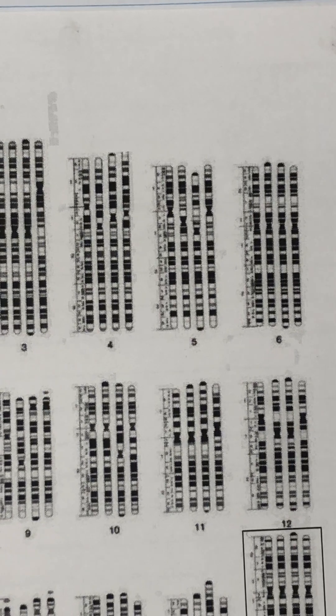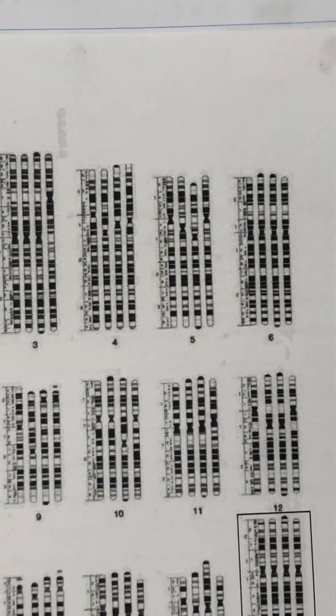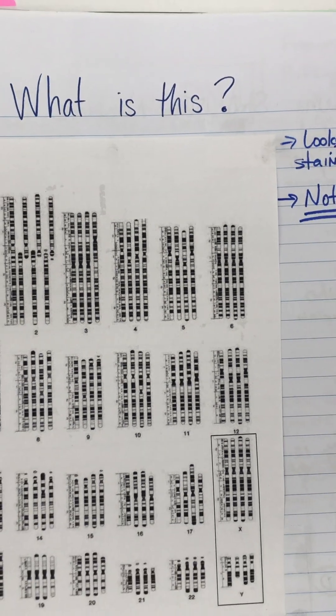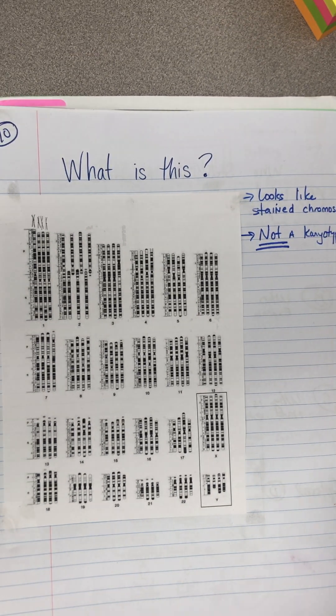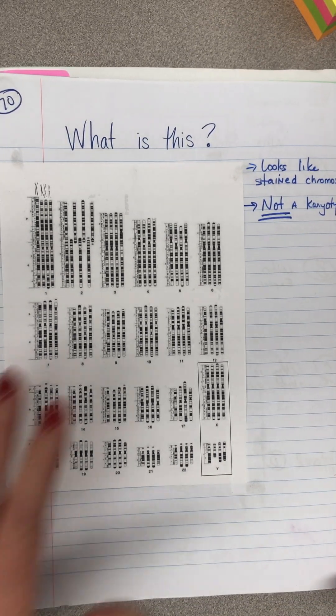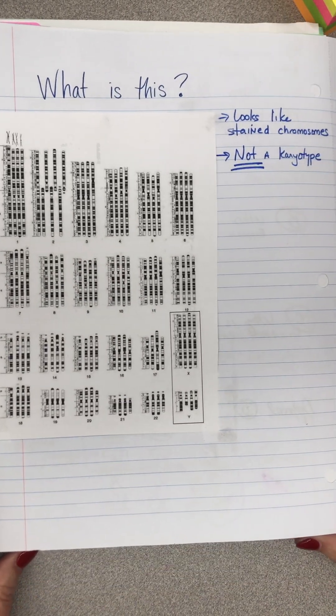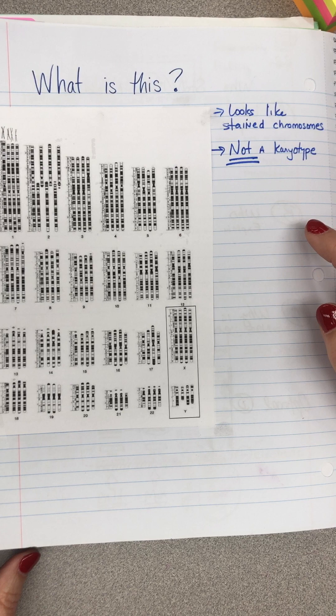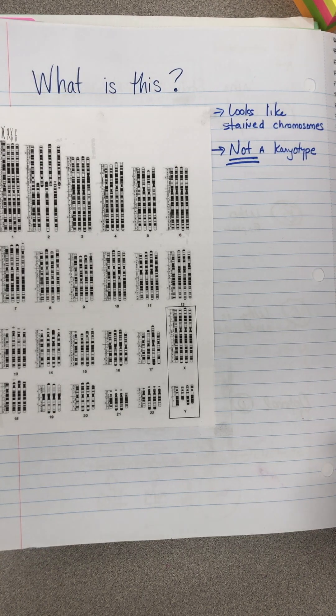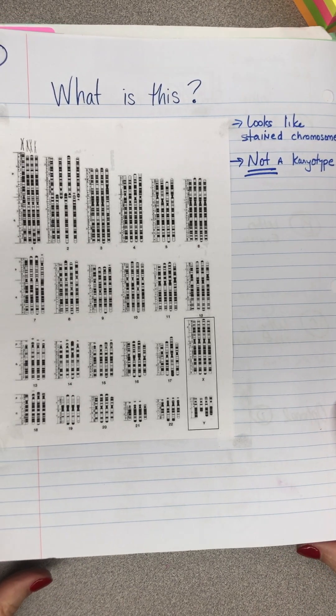So we wrote down on our paper that it looks like a bunch of stained chromosomes, which is what a karyotype is. So that was great and quite accurate. We put this on page 70 of our notebook and we wrote down that it does look like we've got a whole bunch of stained chromosomes there, which was true.